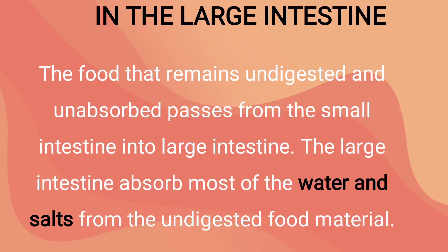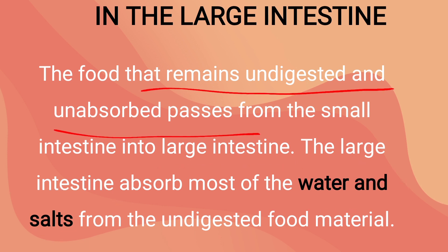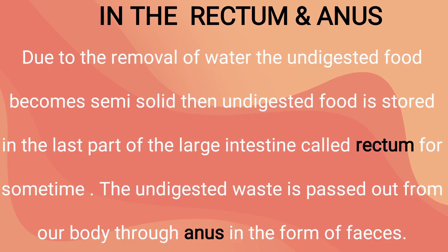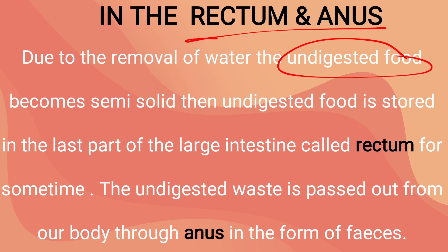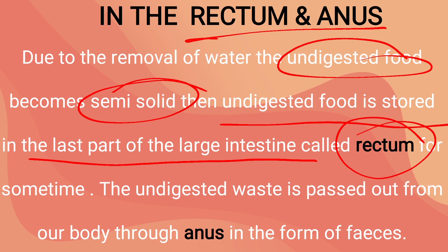After the small intestine, food transfers into the large intestine. The food that remains undigested and unabsorbed by the small intestine is transferred to the large intestine, which absorbs water and salt from the undigested food material. Due to the removal of water, the undigested food becomes semi-solid. It is then stored in the last part of the large intestine known as the rectum, and eventually passes out of the body through the anus in the form of feces.